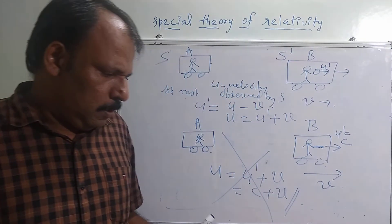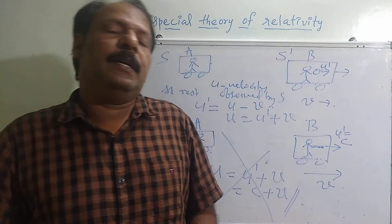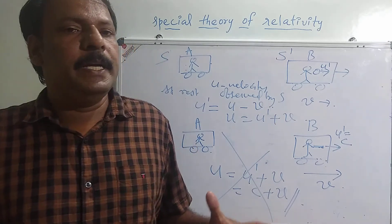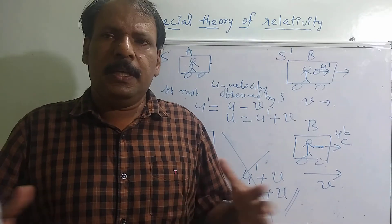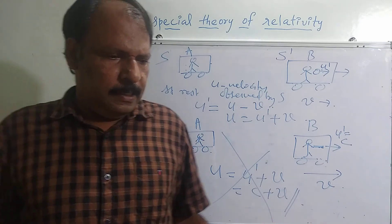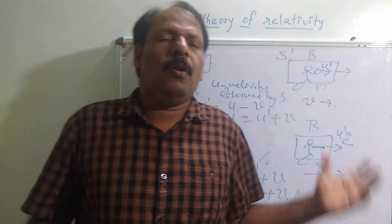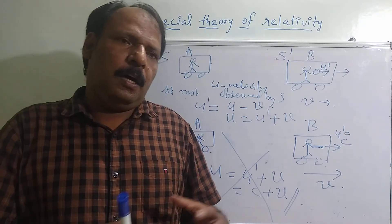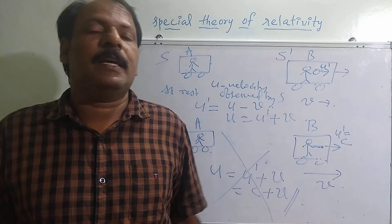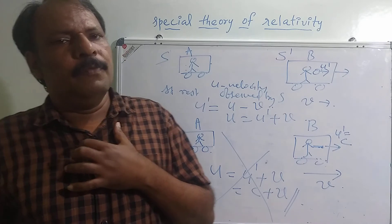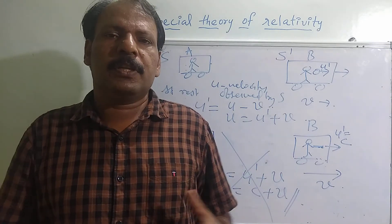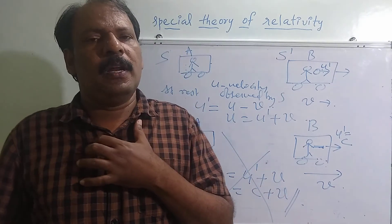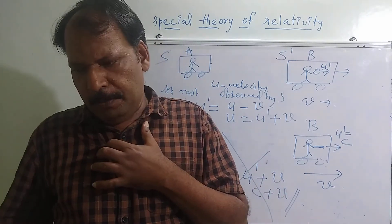We also assumed in earlier times that there is a medium called ether, and all planets — earth, sun — are floating on this ether medium. The ether is at absolute rest, and we can specify motion with respect to that ether medium. Based on that, Michelson and Morley did an experiment.